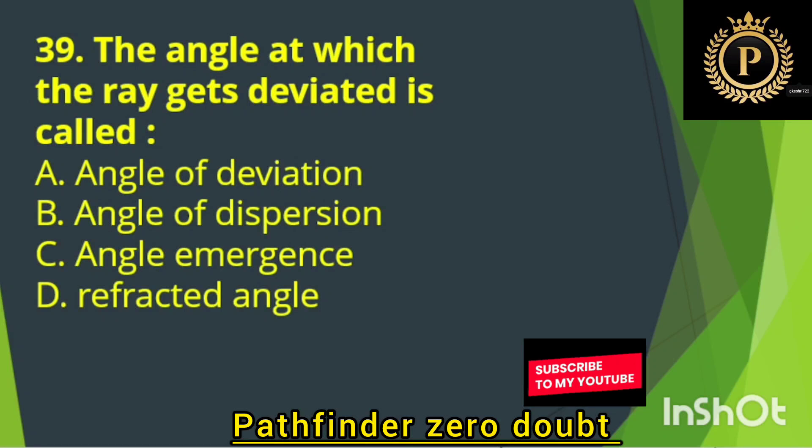The angle at which the ray is deviated is called — Option A: Angle of deviation.